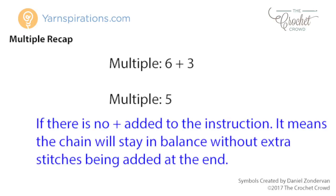If the multiple number plus the additional number is the same number, it's simply given as one number because it's the same thing. So 2 plus 2 is the same as saying multiple of 2. To recap, multiples can be something like 6 plus 3, or they can just be a single digit like multiple of 5. If there are no additional chains needed to bring the chain into balance, you will not see a plus sign with an additional number.